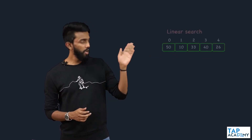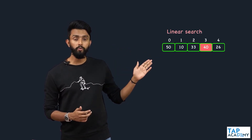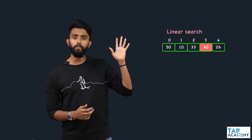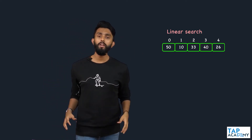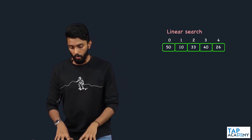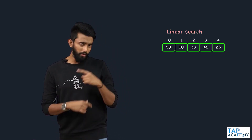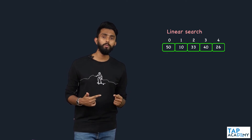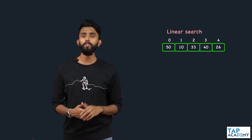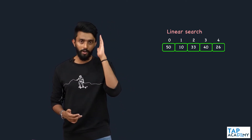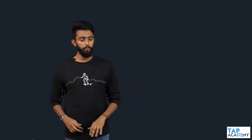What does linear search mean? Assume this is an array. I want to search for 40 — whether 40 is there or not, or any element for that matter. How do you perform search? This is your concept of linear search. Searching is a very important operation. We will be looking at different searching algorithms which are more and more efficient, but let's begin with linear search.